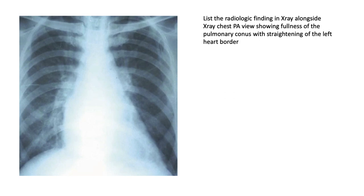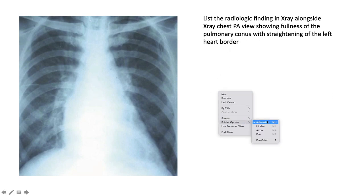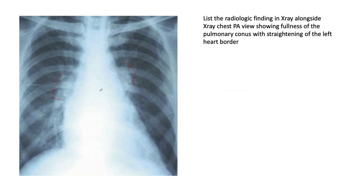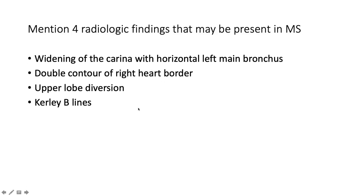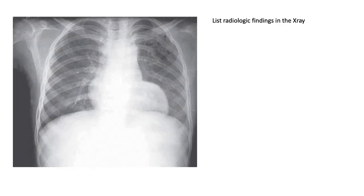This PA X-ray view shows fullness of the pulmonary conus and straightening of the left heart border. This is mitral stenosis. Other findings include widening of the carina with a horizontal left main bronchus due to the large left atrium, a double contour of the right heart border, upper zone diversion, curly B lines, and even pulmonary haemosiderosis.